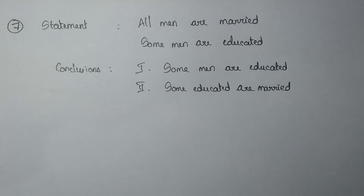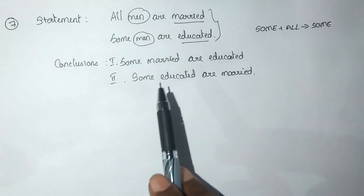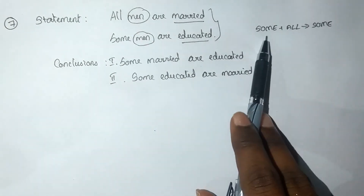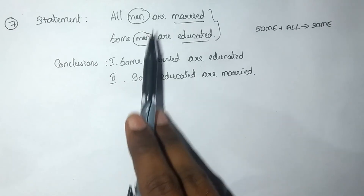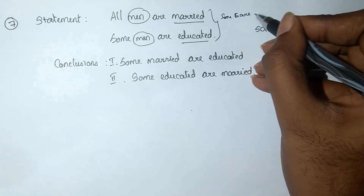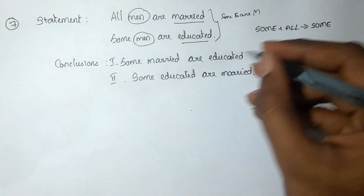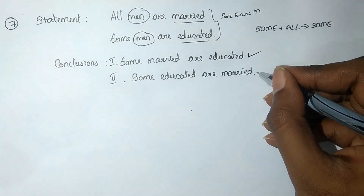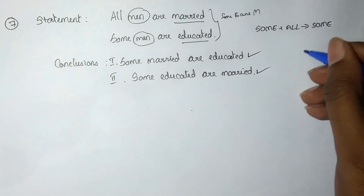Statement: All men are married. Some men are educated. Conclusion 1: Some men are educated. Conclusion 2: Some educated are married. Applying Some plus All rule — some is the starting point, and since some is reversible, Some educated are married is valid. Some married are educated can also be derived. Both conclusions 1 and 2 are correct, so the answer is option E.